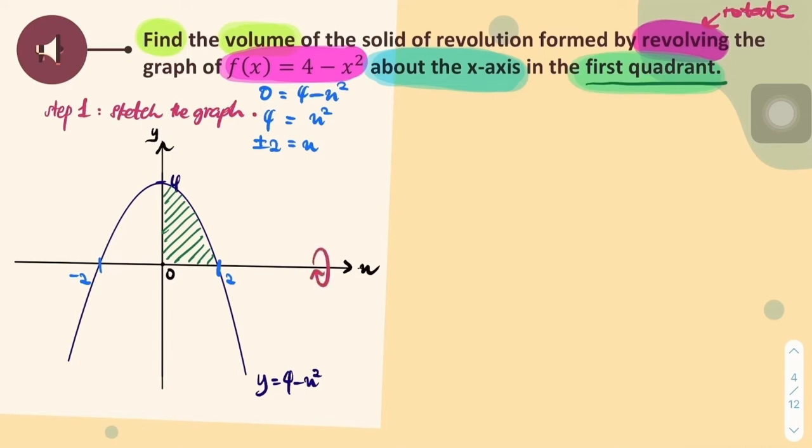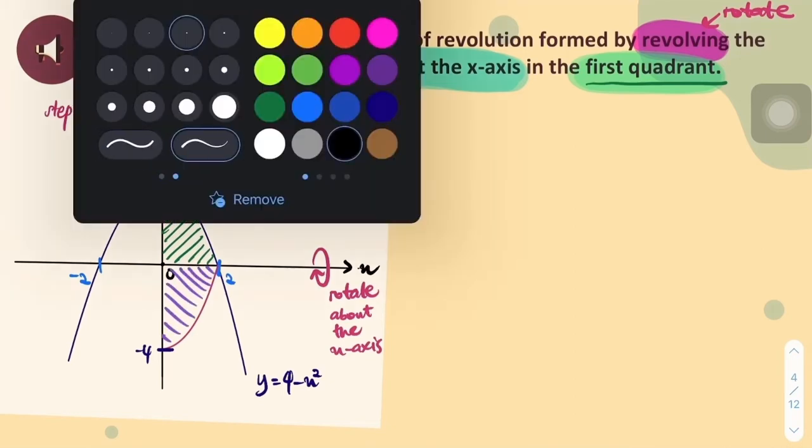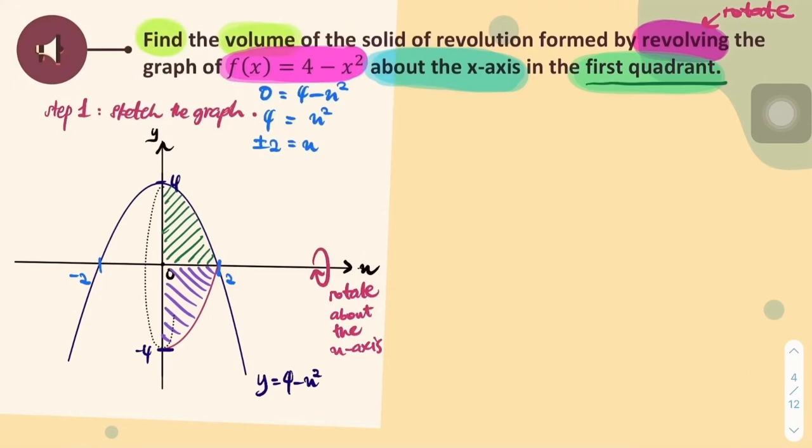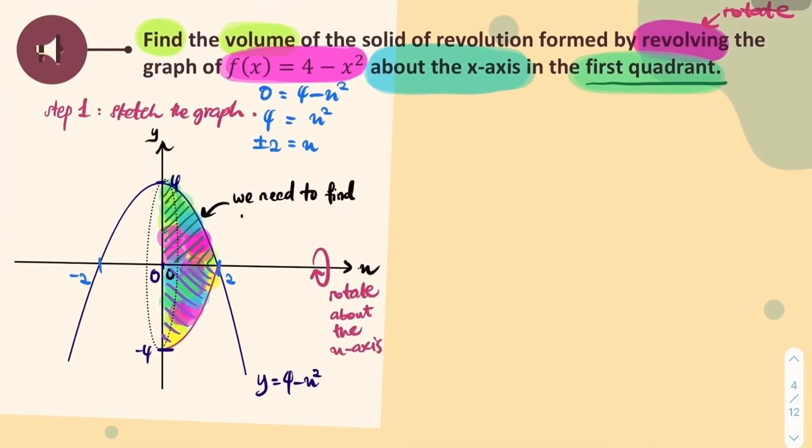The word revolving means we are rotating the graph about the x-axis. Imagine that the graph is being rotated circularly 360 degrees. We will get a reflection of the graph whereby a circular kind of shape is formed. We call this an irregular shape, and we need to find this volume.